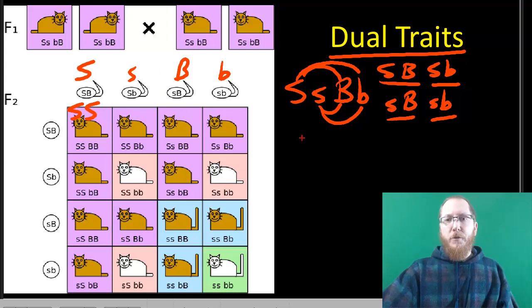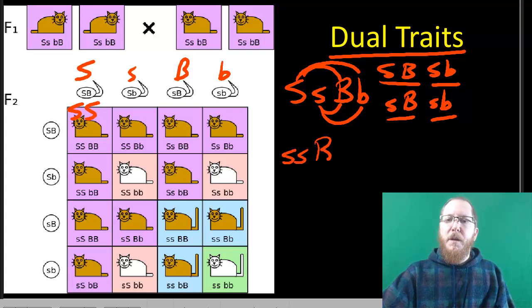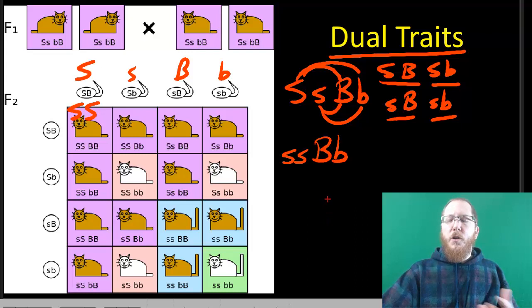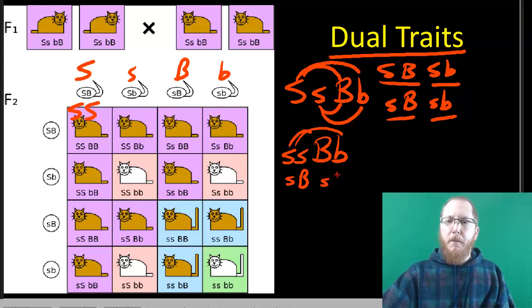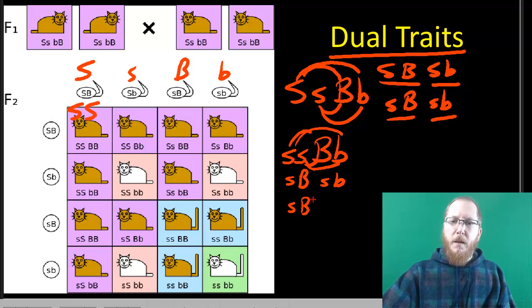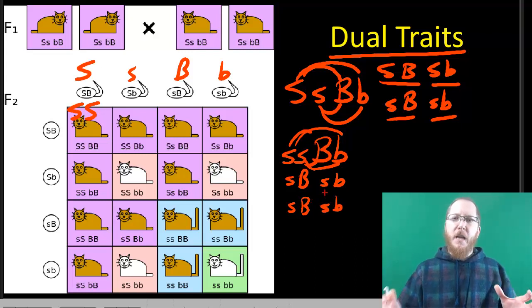For the other parents, or in some other scenarios, you might have things where it's like little s, little s, big B, little b. Don't freak out. It's okay to have where a lot of your gametes are the same. In this case, we're going to have little s, big B, and we're going to have little s, little b. And then the other one's going to be the same idea. It's going to be little s, big B, and it's going to be little s, little b. So you'll notice that we only have two different types of gametes.